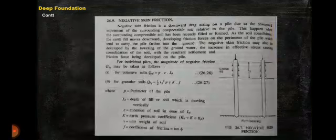In this slide I have discussed about negative skin friction. The negative skin friction is downward drag action on the pile due to downward movement of surrounding compressible soil relative to the pile. It happens when the surrounding compressible soil has been recently filled or formed. As the soil consolidates, the earth fill moves downward developing skin friction force on the perimeter of the pile, which tends to carry the pile further into the ground. The negative skin friction may also be developed by the lowering of the ground water.